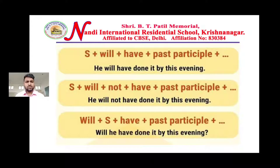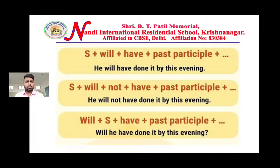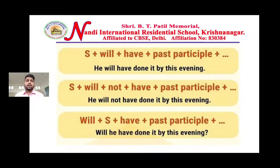The first type is the affirmative or positive sentence. The structure is: Subject + will + have + past participle. Note that 'shall' was used for first and second person but that is outdated now. The verb form used is verb form three (past participle). For example: 'He will have done it by this evening.'